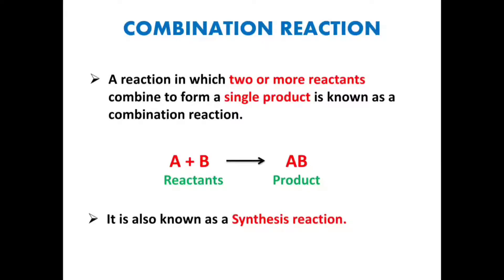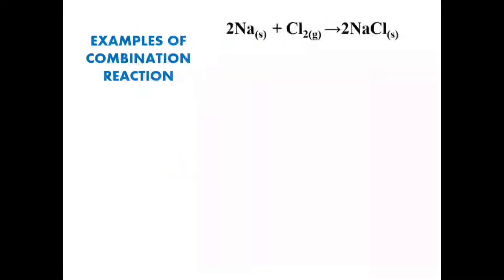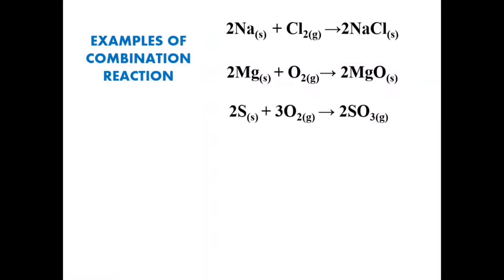Let me teach you a few examples for combination reactions. Na + Cl₂ → NaCl; Na and Cl₂ are the reactants and NaCl is the product. Mg + O₂ → MgO; Mg and O₂ are the two reactants and MgO is the product. S + O₂ → SO₃; S and O₂ are the reactants and SO₃ is the product. In these three examples, elements are the reactants — two elements combining to form one single product.